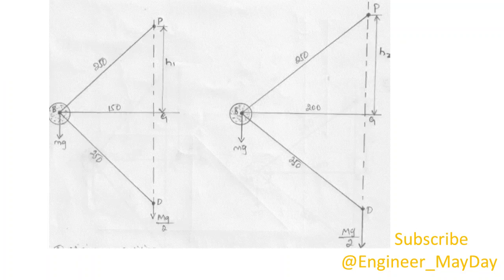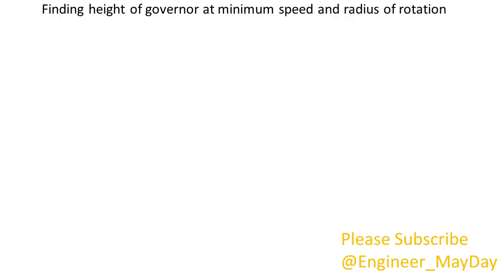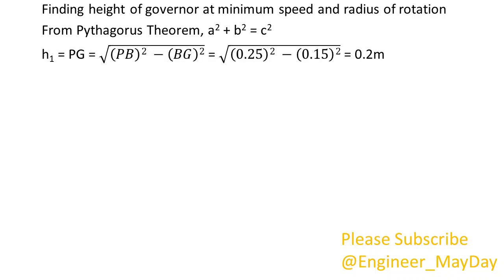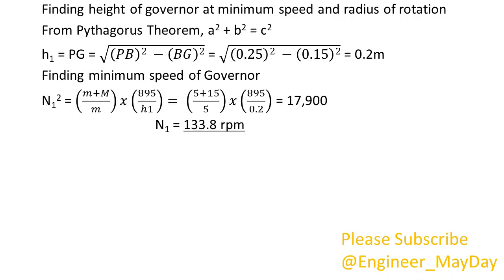Here is a diagrammatic representation of the Porter governor. Take note of the positions of the arm length, the radius of rotation and height of the governor. Finding height of governor at minimum speed and radius of rotation: from Pythagoras theorem, square of A plus square of B equals square of C. H1 equals 0.2 meters. Finding minimum speed of governor: N1 equals 133.8 RPM.